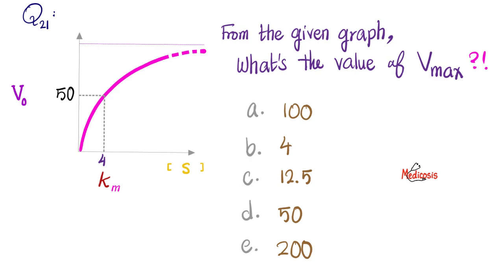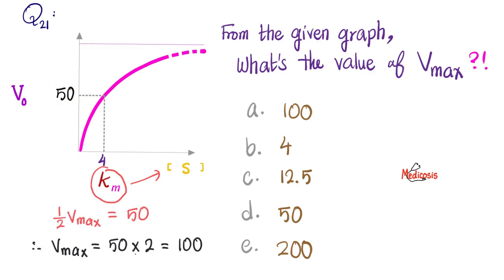Here is the answer. Recall that the value of Km has a definition: it is the substrate concentration that you see when the velocity is half — i.e., half of Vmax. So this 50 is half of Vmax, which means Vmax has to be 50 multiplied by 2, equals 100.